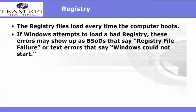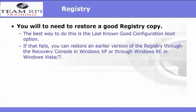Remember, the registry files load every time the computer boots. Another issue that can cause your GUI not to load is a bad registry entry. If Windows attempts to load a bad registry, these errors may show up as a Blue Screen of Death, and it will give you a textual error that says 'registry file failure' or 'Windows could not start.' To solve this problem, you'll need to restore to a good registry copy. The best way to do this is the Last Known Good Configuration boot. If that fails, you can restore to an earlier version of the registry through the recovery console in Windows XP, or through Windows RE in Windows Vista and Windows 7.